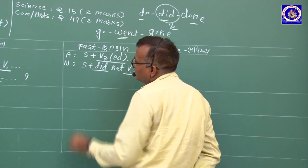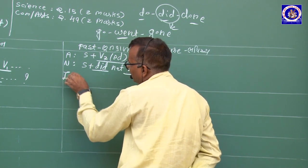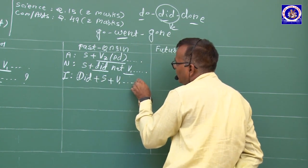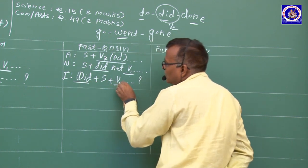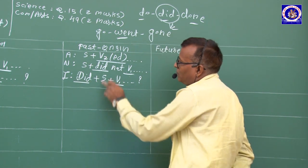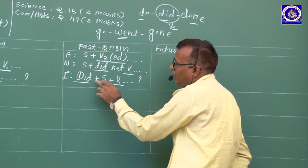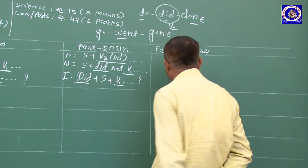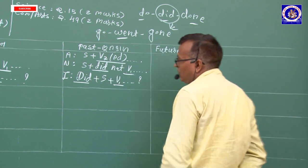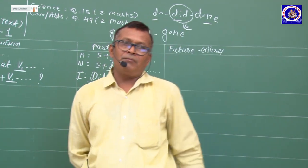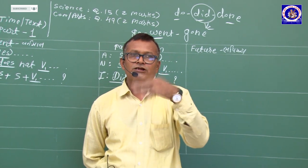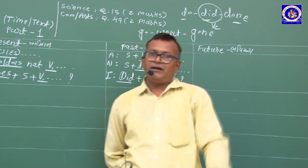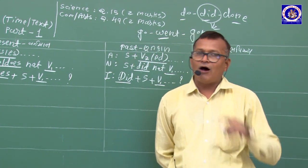Negative વાક્યમાં did + not, Interrogative: Subject ની આગળ did આવે. Practice — ઘણા videos જોઈ practice કરો, practice કરો, lines બનાવો — આવનારા સમયની અંદર ઉપયોગ આવશે.